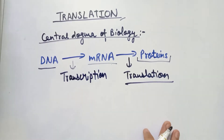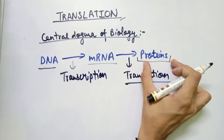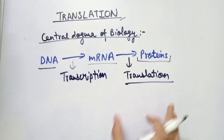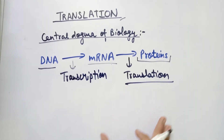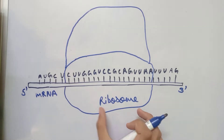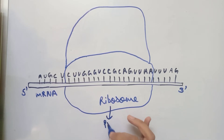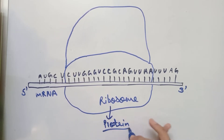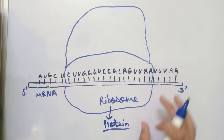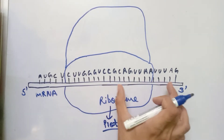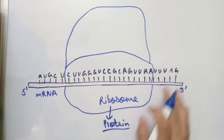The process of making proteins or a polypeptide from mRNA is known as translation. We will study this process in detail. The translation process happens in the ribosome, because ribosomes produce proteins in the cell. This mRNA, which contains different base pairs, is processed there.